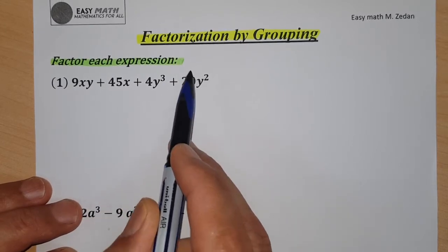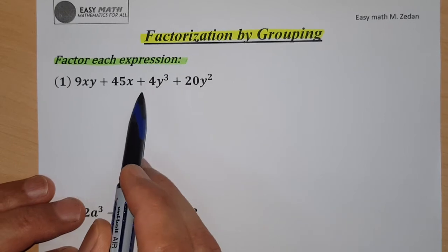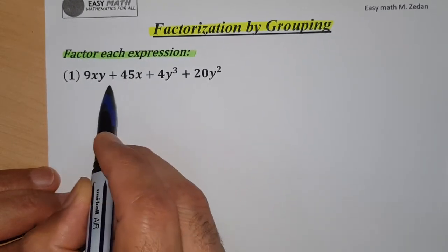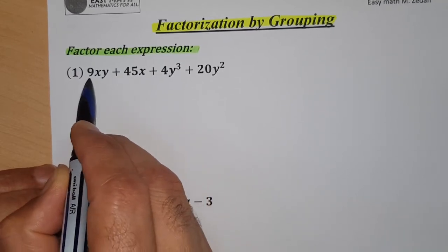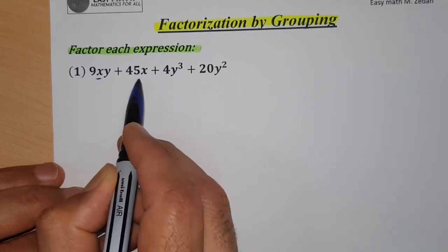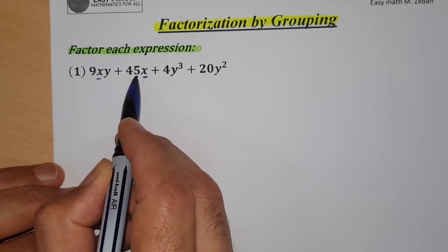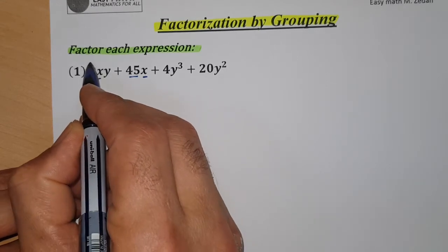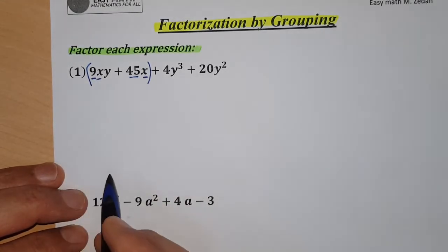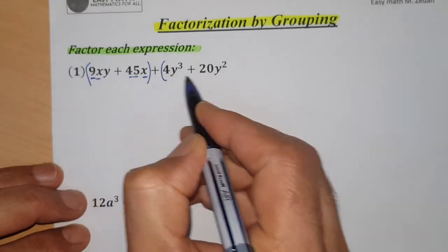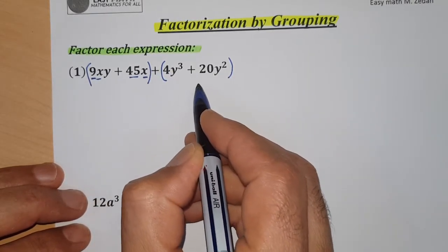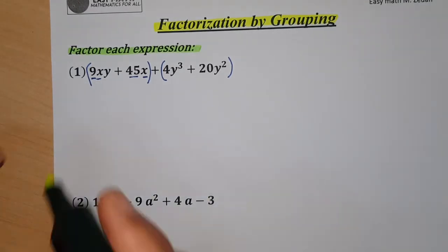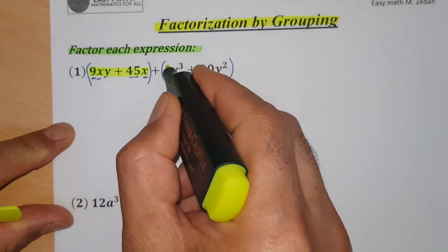This type of factorization depends on selecting two terms — or maybe three in some questions — such that the two terms have a common factor. As you see here, these two terms share a common factor x, and 9 and 45 are both divisible by 9. So you take a group: first and second term as one group, and third and fourth as the second group. Now I have two groups.